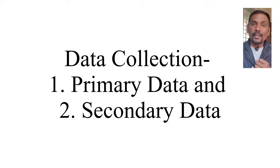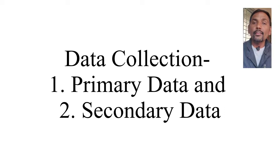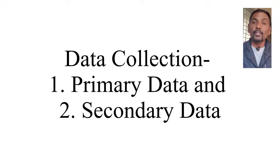The next point is data collection — how you collected primary data and secondary data, and what the sources were. Primary data is first-hand information collected by the researcher, perhaps through survey questionnaires or observation. Secondary data has already been published by others and can be obtained from websites, journals, magazines, and research papers. For a PhD thesis, collecting primary data is compulsory since secondary data alone is not sufficient.